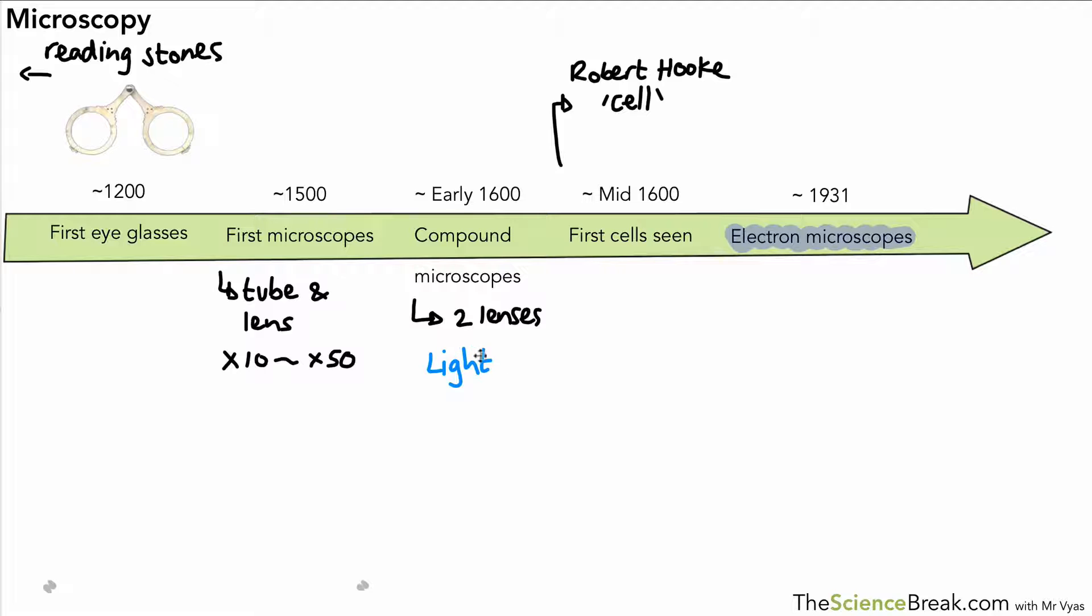The light microscope that you have in your classroom now is a type of compound microscope and that can magnify things up to about 1500 times. So in other words, things look about 1500 times bigger through the microscope compared to real life.